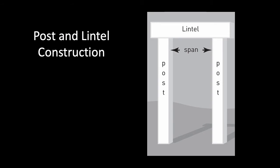The second most basic construction system after stacking and piling is post and lintel construction. This consists of two uprights or posts which support a horizontal crosspiece — a lintel, or sometimes called a beam. Stone and wood are the most common materials for this type of construction, but neither has great tensile strength, so it is difficult to span long distances without caving in.